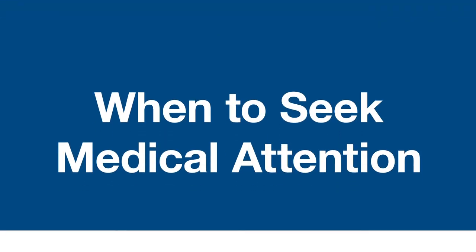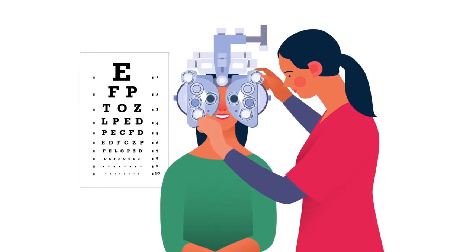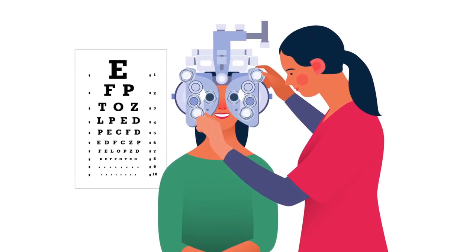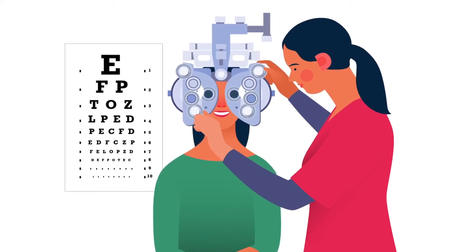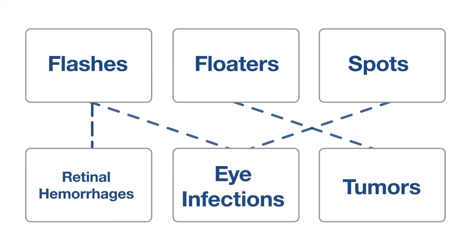When to seek medical attention. See an ophthalmologist if you have a new onset of symptoms, your vision is gradually shaded on one side, or there's a sudden decline in sharp, central vision. Floaters, flashes, and spots can be symptoms of more serious problems, like retinal hemorrhages, eye infections, and tumors.